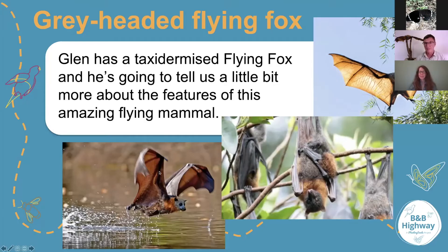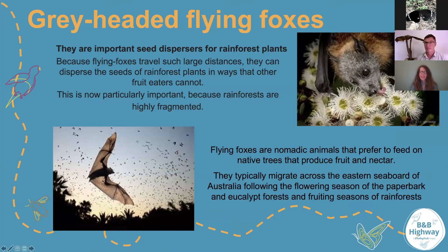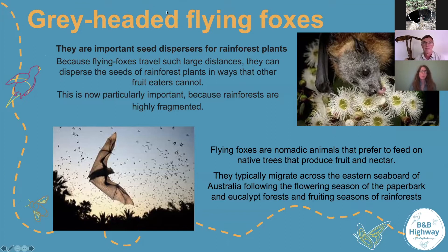Thank you so much, Glenn. What a pleasure to see that up close and hear your incredible knowledge about our grey-headed flying foxes. As Glenn was talking about, the flying fox's ability to spread pollen is remarkable — absolutely their face can be covered as well. The other incredible thing about them is they are our furthest flying pollinator — they travel long, long distances spreading seed and spreading pollen. Of course, they are also nocturnal, so they're one of our nocturnal pollinators, doing the important job of pollination through the night.